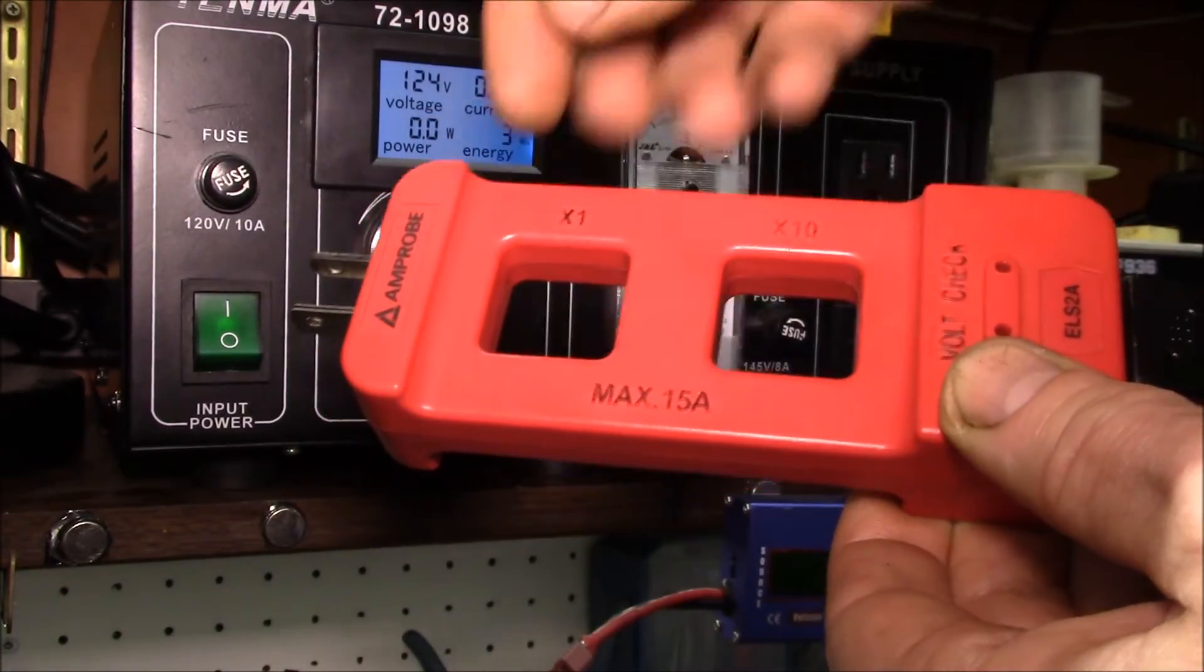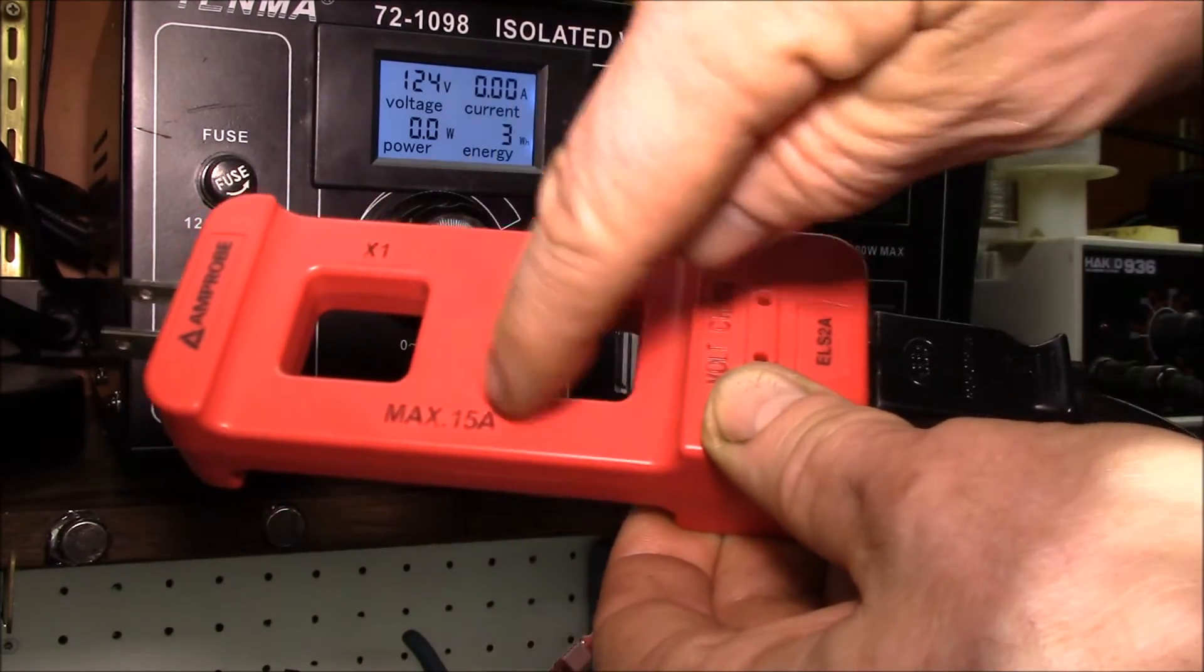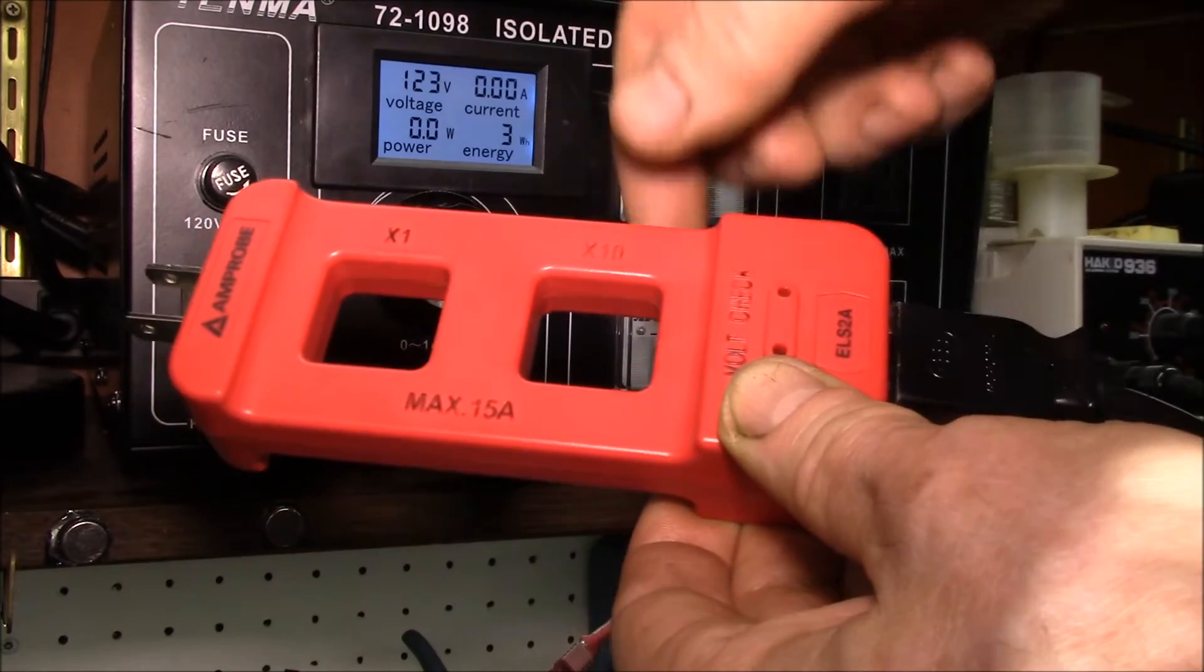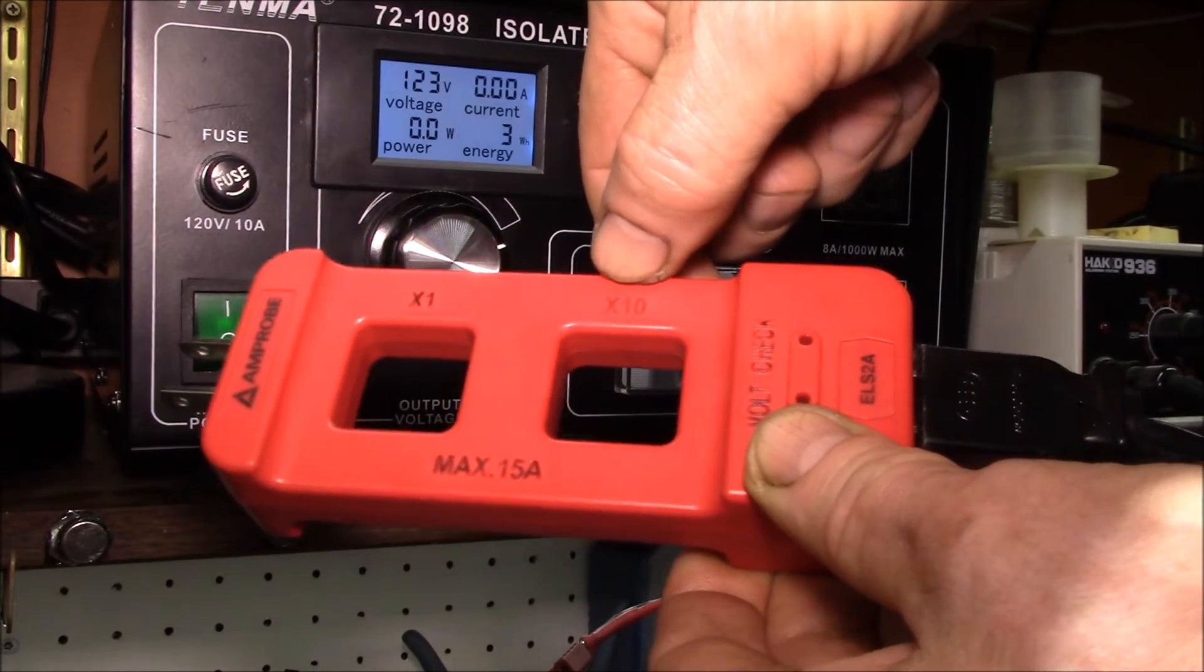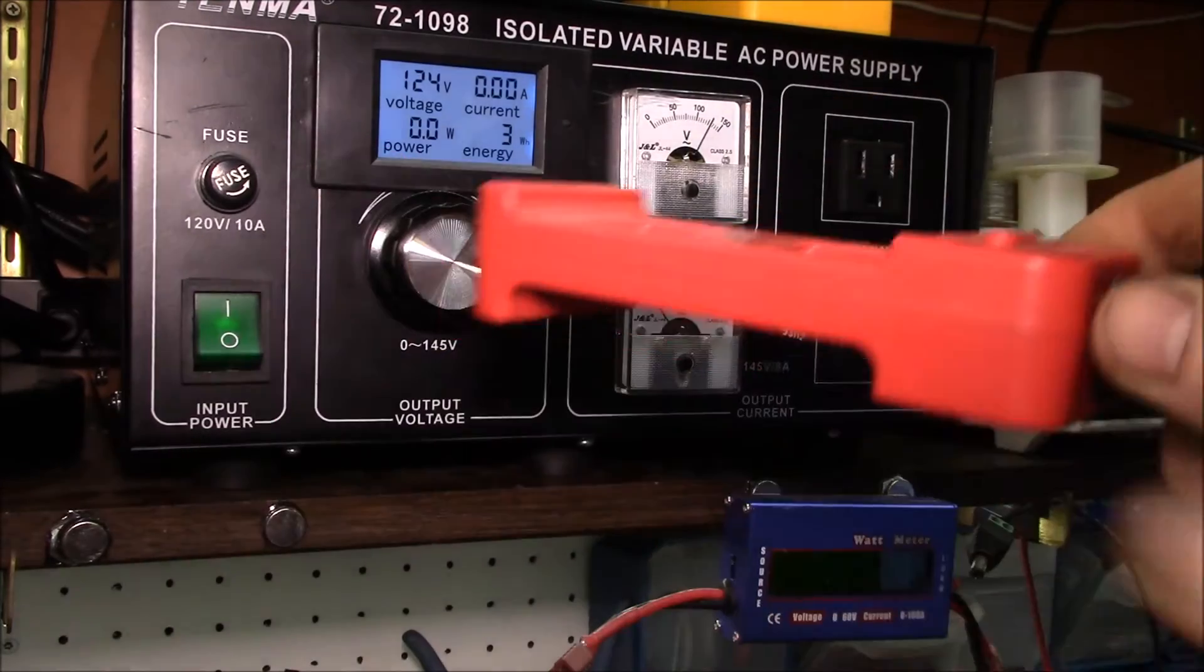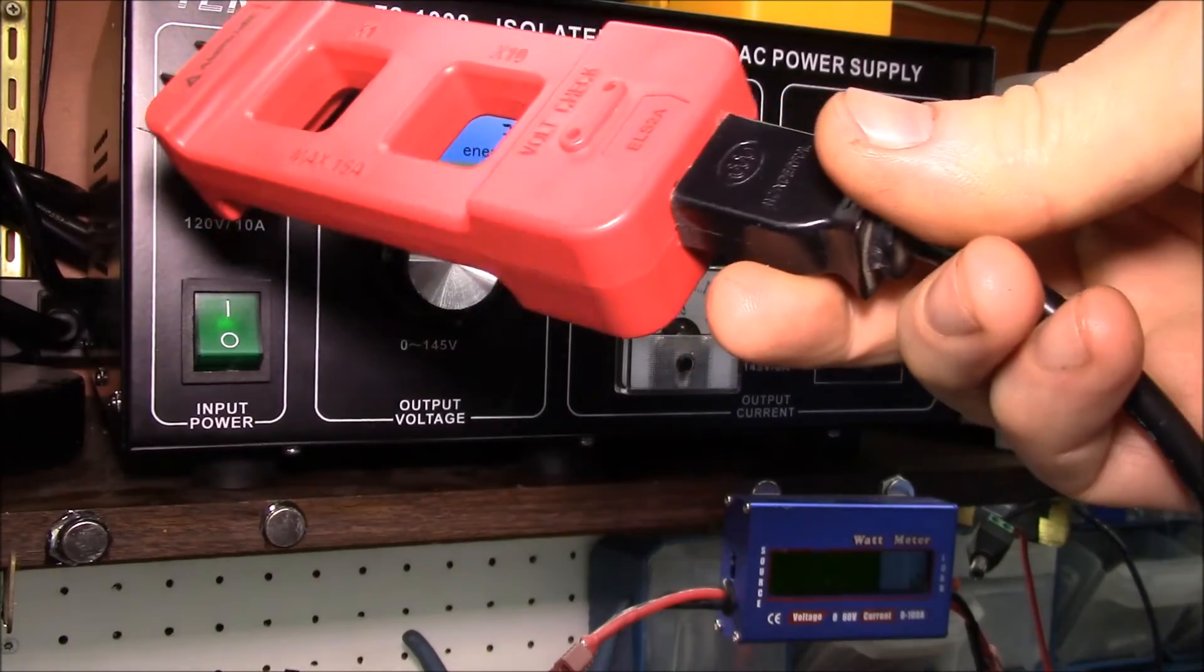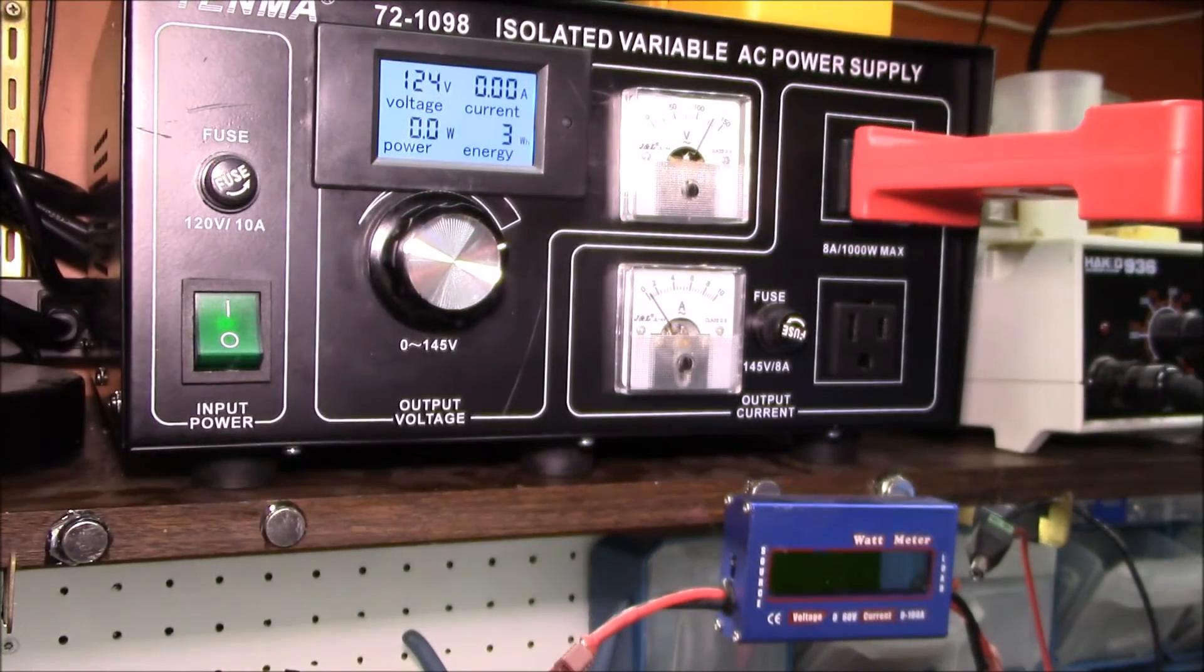You can run a clamp meter through there and get a times one reading. Over here they have 10 loops of wire - that's the x10 loop - and you get a 10 times current reading. Let me plug that in.